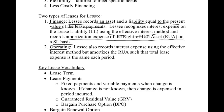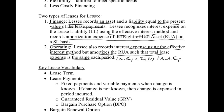For an operating lease, which we'll cover in a future video, they're still going to record interest expense using the effective interest method. But now we amortize the asset such that total lease expense is the same each period — essentially, lease expense equals interest expense plus amortization. The amortization is the key difference between the two methods, and we'll get to that when we do the operating lease example a few videos down the road.